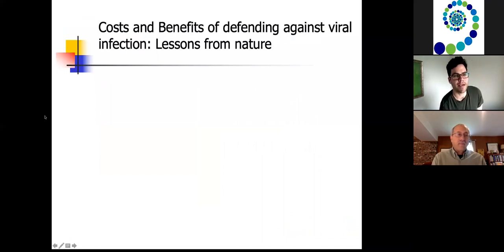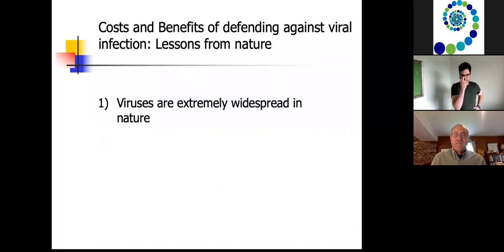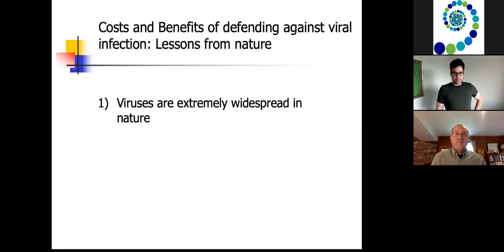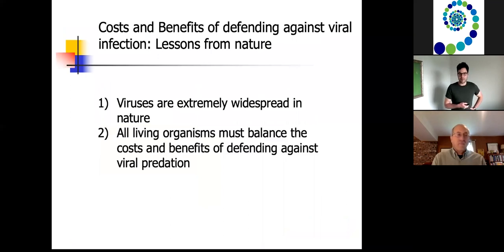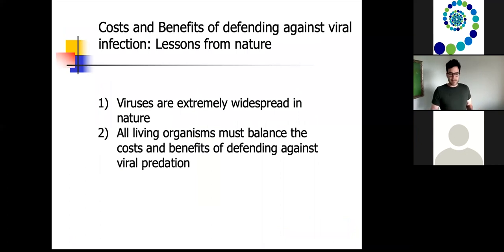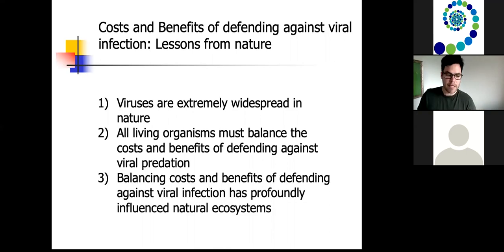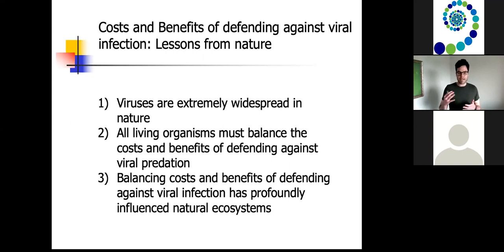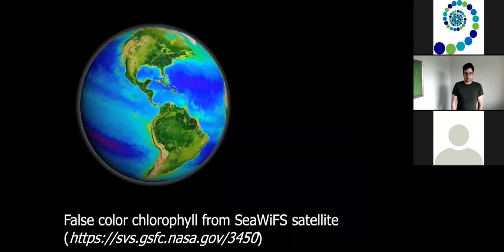Thanks very much, Lou. Today I wanted to talk about viruses and some natural ecosystems. Viruses are extremely widespread in nature, and they infect many, many different organisms. Many organisms have to balance the costs and benefits — much in the way that we're currently balancing costs and benefits of defending against viral predation. This process of balancing the costs and benefits of defending against viral infection has had a really profound influence on natural ecosystems and on marine ecosystems.